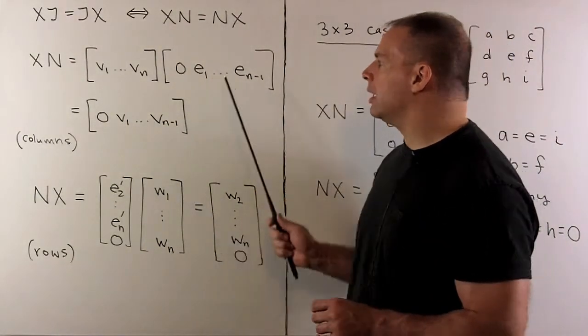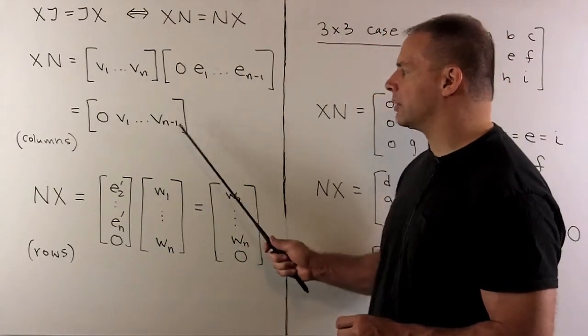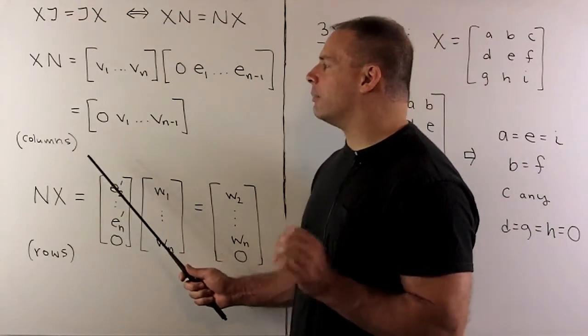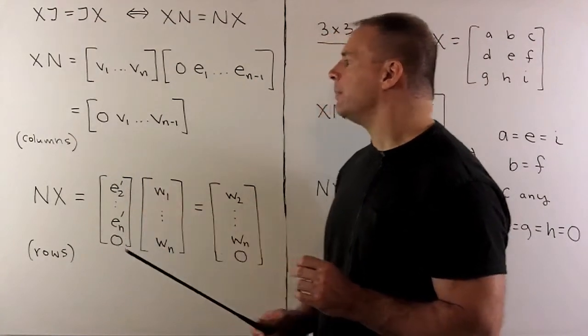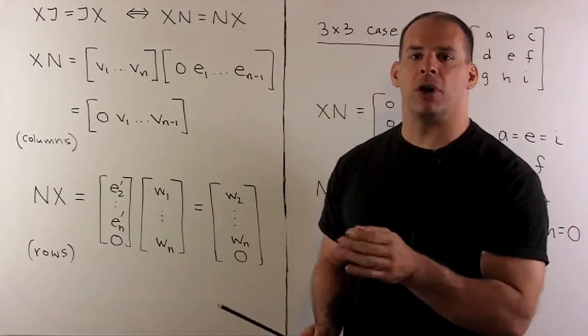So E1 goes to V1, E2 goes to V2. So we notice here the effect of multiplying on the right by N is to shift our matrix over by one, fill in the first column with zeros.